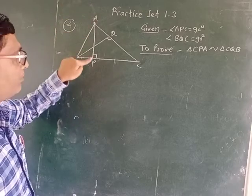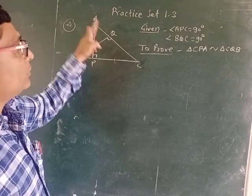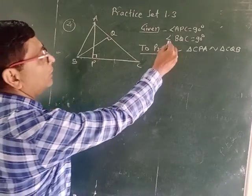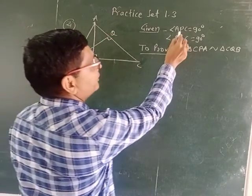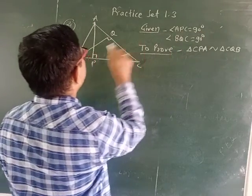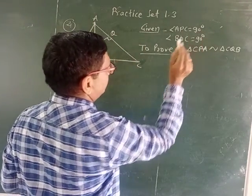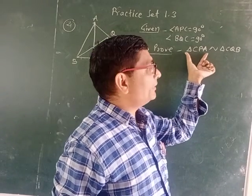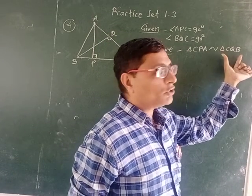In this triangle, AP is perpendicular to BC and BQ is perpendicular to AC. These two perpendiculars are given, and angle APC equals 90° and angle BQC equals 90°. Now we have to prove that triangle CPA is similar to triangle CQB.